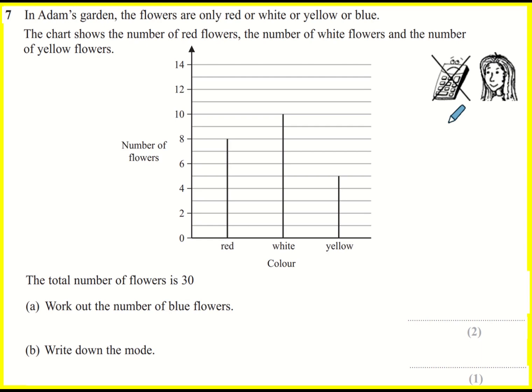In Adam's garden, the flowers are only red or white or yellow or blue. The chart shows the number of red flowers, the number of white flowers, and the number of yellow flowers. The total number of flowers is 30. Work out the number of blue flowers. Okay, so what I need to do is read off this chart.